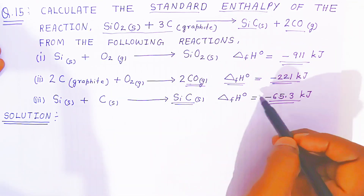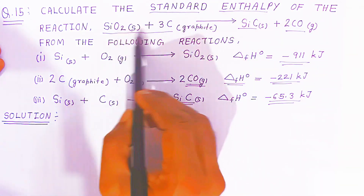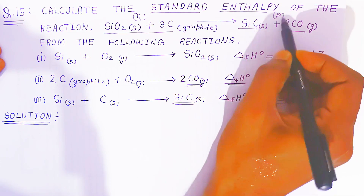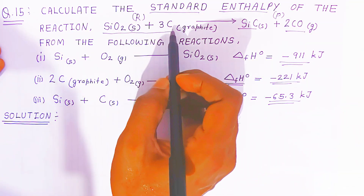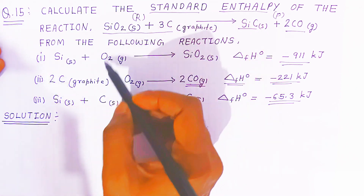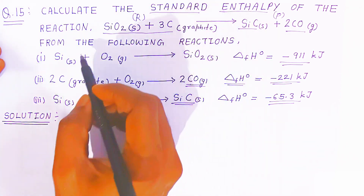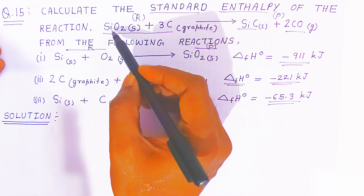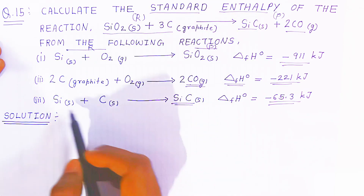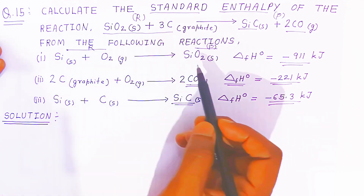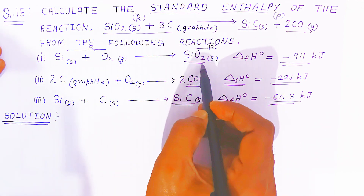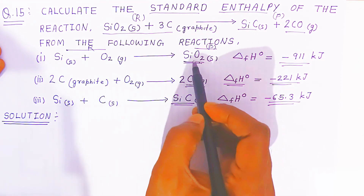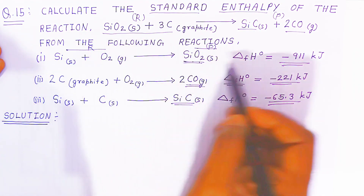By knowing these standard enthalpies you have to calculate the standard enthalpy of this reaction. Look at the reactant side — you have two reactants: silicon oxide and carbon graphite. Now check whether silicon oxide is present in the given reactions. Silicon oxide is not on the reactant side; it is on the product side of reaction one. So if you want silicon oxide on the reactant side, you have to reverse equation number one.